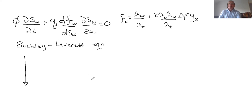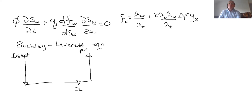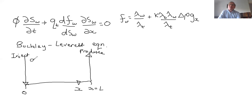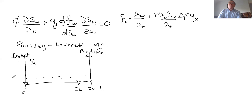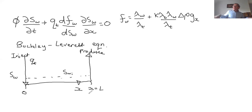Let's think about that by considering exactly the system we're interested in. We have an injection well here. Imagine we inject water here and we produce oil and water here, and we're considering one-dimensional flow in the x direction. This will be x equals zero; this is x equals L. We impose a total velocity because that's what you inject, and that can be a function of time — you can pump and inject at different rates. Initially before water flooding, we have a reservoir at some initial low water saturation, and the normal assumption is that this is an immobile water saturation, which we assume is a constant.